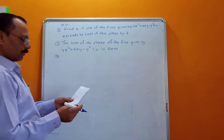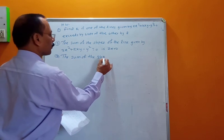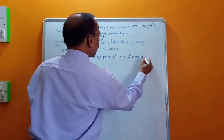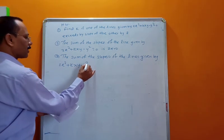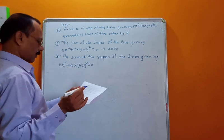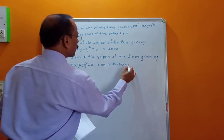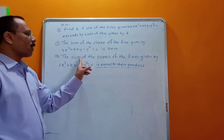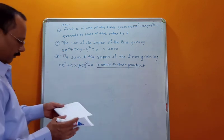Homework Problem 3: The sum of the slopes of the lines given by 2x² + kxy − 3y² = 0 is equal to their product. The condition is m1 + m2 = m1·m2. Proceed using the first method to find k.